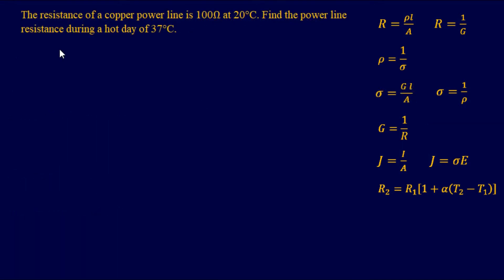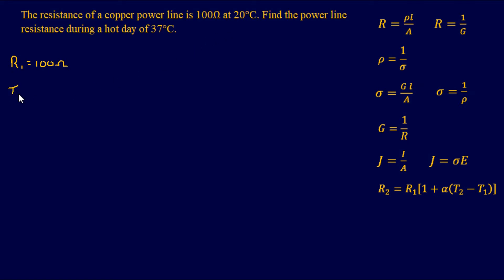The resistance of a copper power line is 100 ohms at 20 degrees Celsius. Find the power line resistance during a hot day of 37 degrees Celsius. On a relatively room-temperature day it's 100 ohms, but on a hot day of 37 degrees Celsius the resistance is going to change. Writing down what we know: R₁ is 100 ohms, and the first temperature T₁ is 20 degrees Celsius.